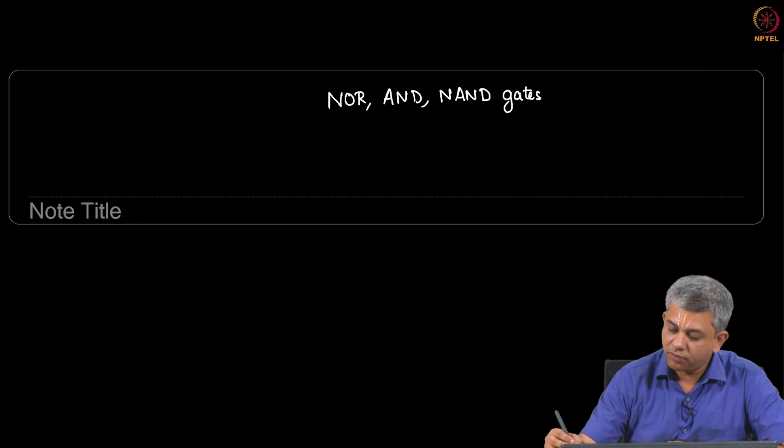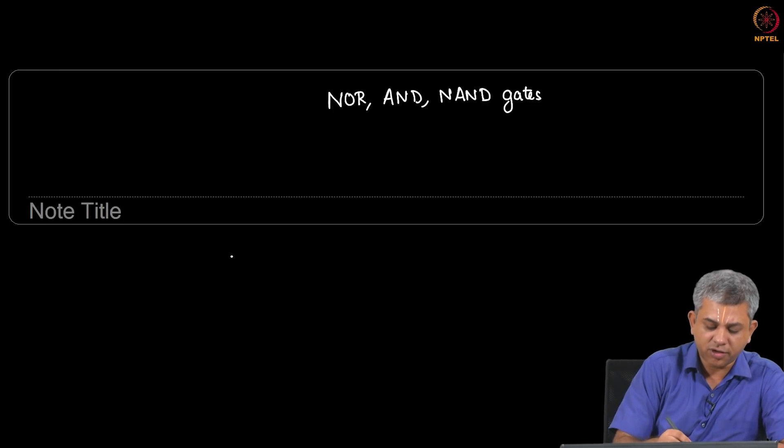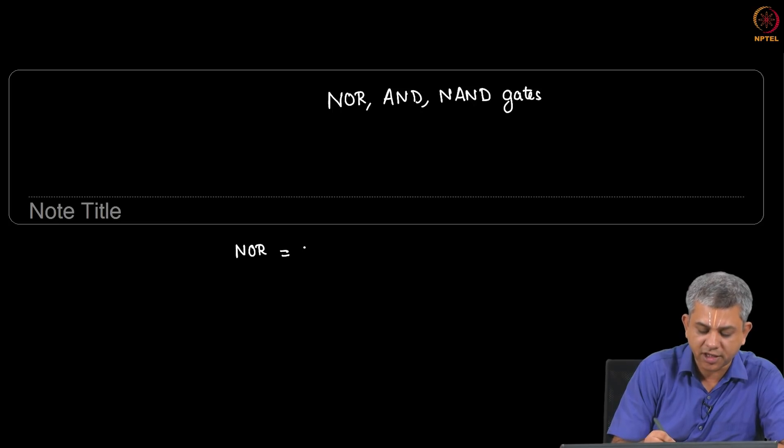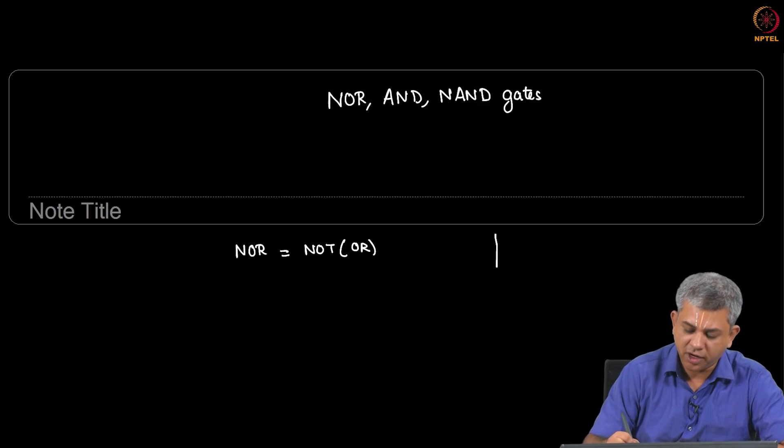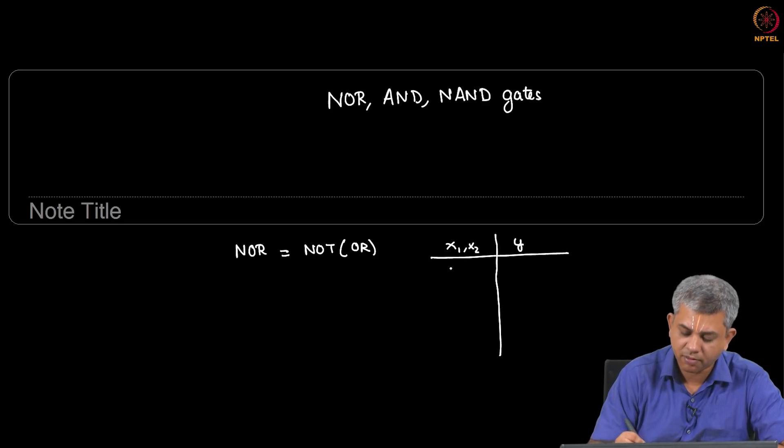In this video we look at a few more gates. The basic algebra for this case had already been done in the previous video. So suppose you take the NOR gate. NOR gate is essentially the opposite of OR gate, so I will quickly write the truth table.